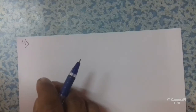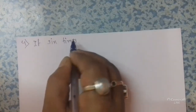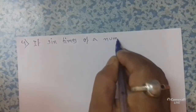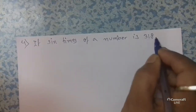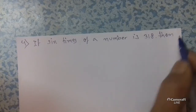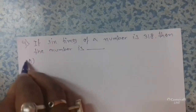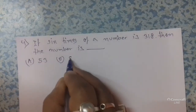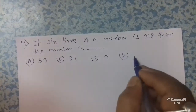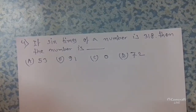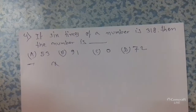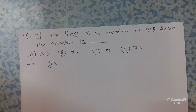I hope all of you understood. Next problem: if 6 times a number is 318, then find the number. The options are 53, 91, 0, and 72. So, if the number is x, 6 times the number means 6x.